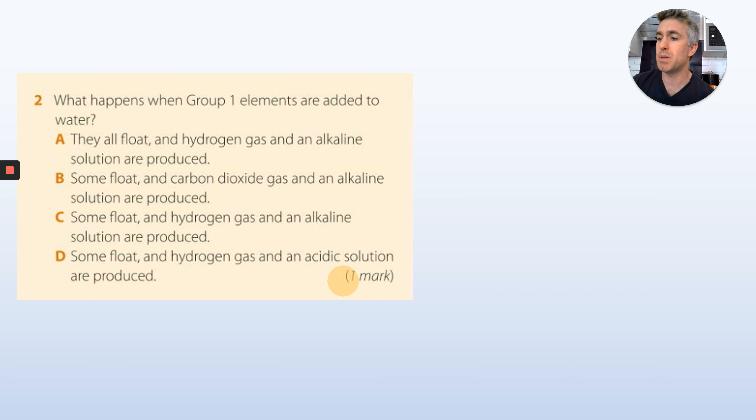Number two. What happens when Group 1 elements are added to water? Again, you just pick the correct one. They all float, and hydrogen gas and alkaline solutions are produced. Some float, carbon dioxide gas and alkaline solutions are produced. Some float, and hydrogen gas and alkaline solutions are produced. Or some float, and hydrogen gas and acidic solutions are produced. Only one of those is correct. You can use the information from previous questions to help.